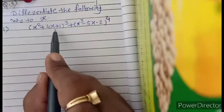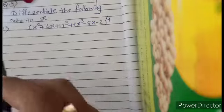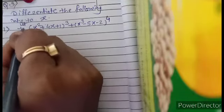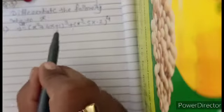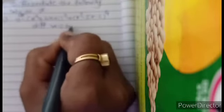The question is (x² + 4x + 1)³ + (x³ - 5x - 2)⁴. We consider this function y equal to the given function, and differentiate y with respect to x. Since these two functions are joined in addition form, we use the rule for addition and take the derivative of each term separately.